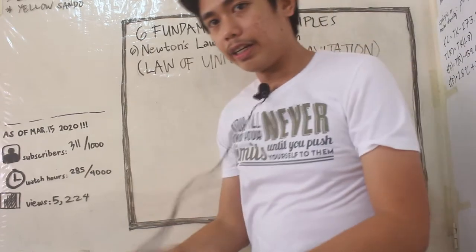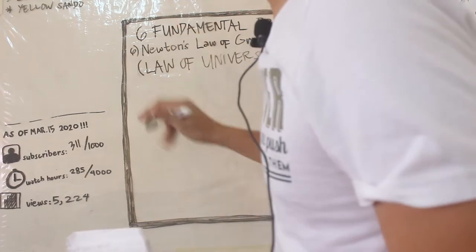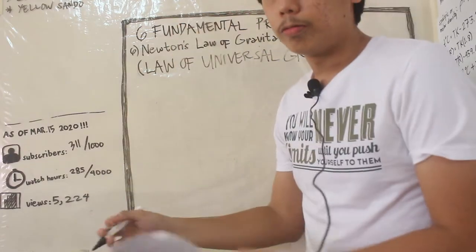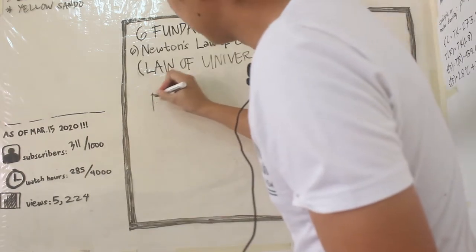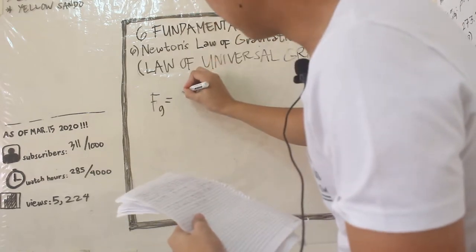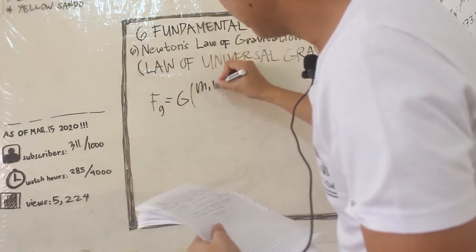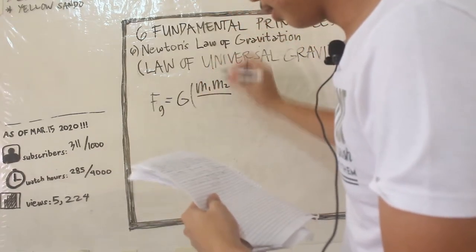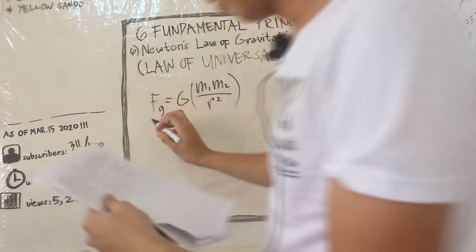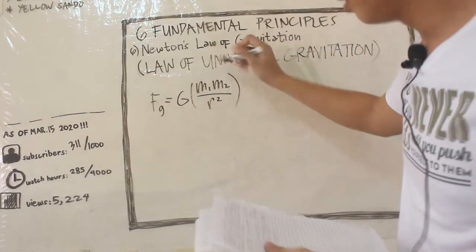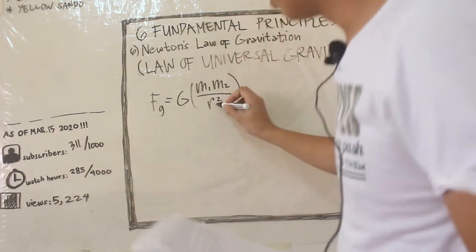As I said earlier, I'll give you the formula so the later part of the definition will be clearer. The gravitational force is equal to G times mass 1 times mass 2 over r squared, where Fg is the gravitational force, these are our masses - mass of the first object and mass of the second object, and r is the distance.